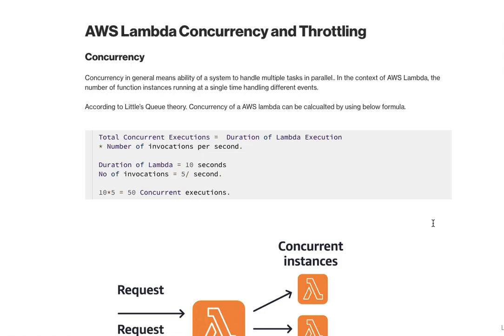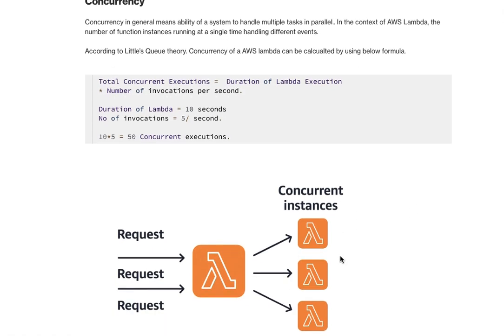In terms of Lambda — Lambda is an on-demand compute service. If you have any process you want to execute and need compute for a short amount of time, Lambda would be a good choice. Whenever a request comes to Lambda it executes that request, and if another request comes while processing the current one, Lambda will spin up another instance to address that request. This process is called concurrency in Lambda terminology.